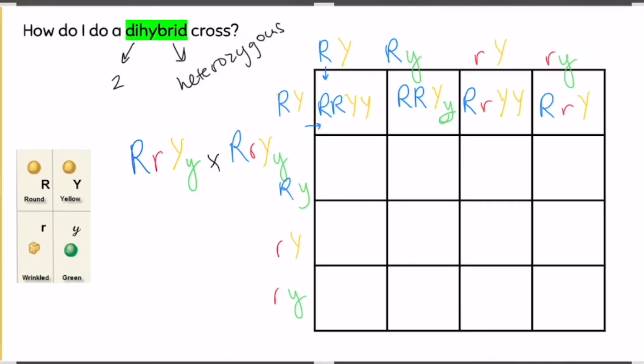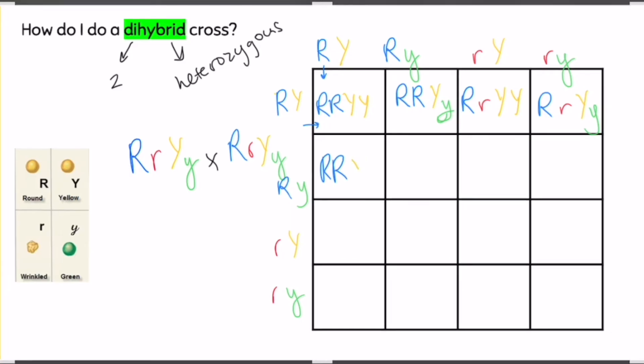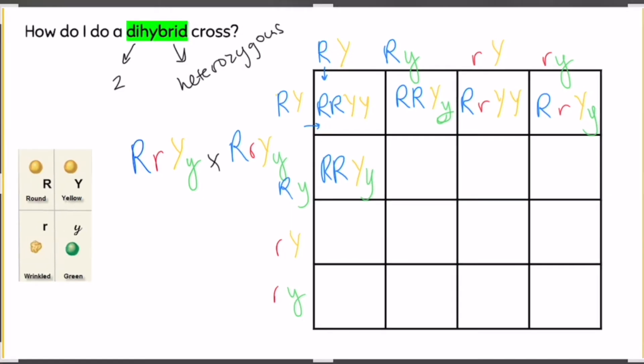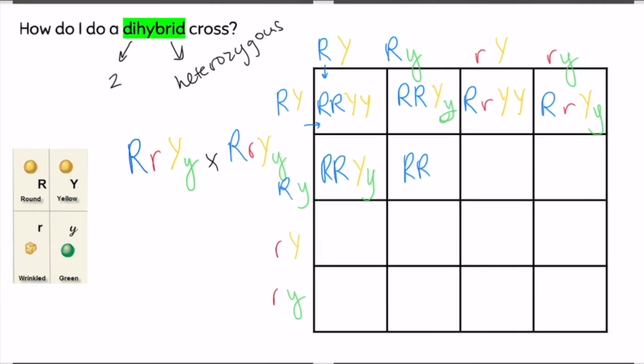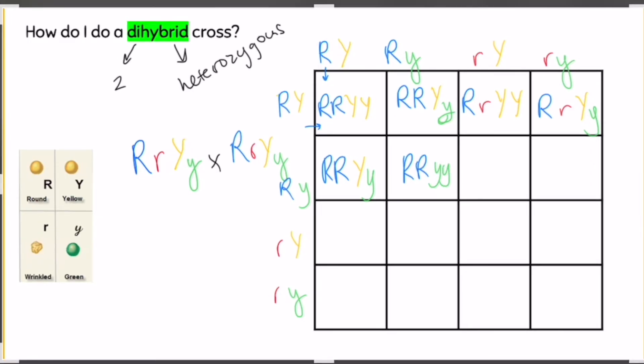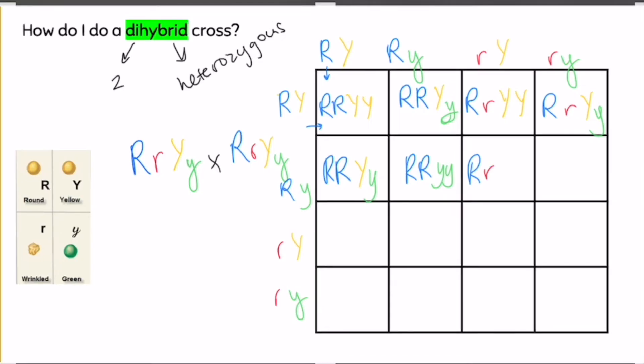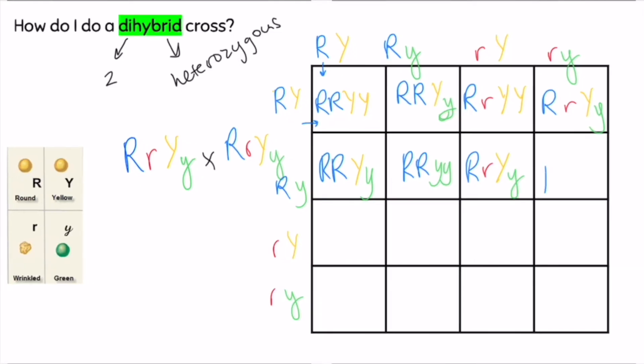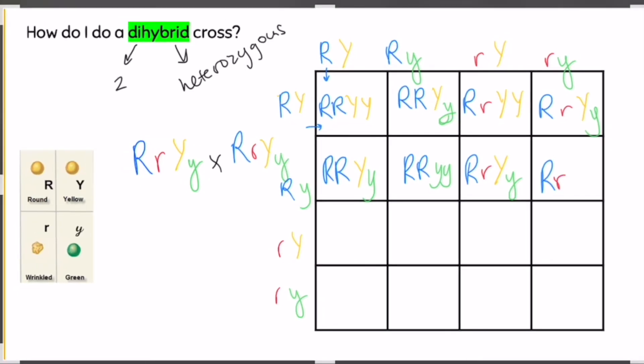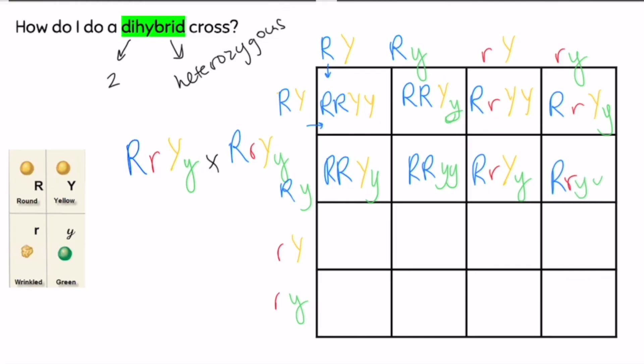And I'll just keep going down my Punnett square just like you do with a regular Punnett square. So when I come into this box, I have my two capital R's and then one of each y, two capital R's, two lowercase y's, capital R from the side, lowercase r from the top. Again, just to be consistent, we always write the capital letter first. Capital R, lowercase r, lowercase y, lowercase y.